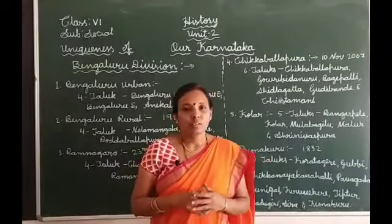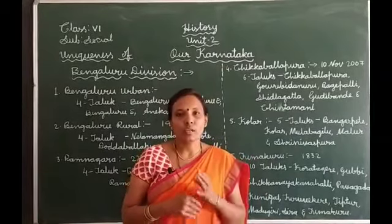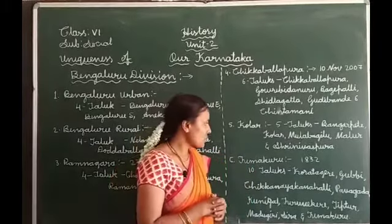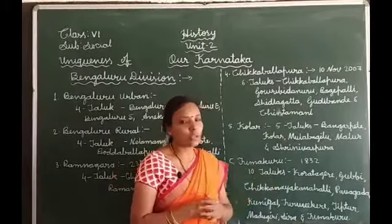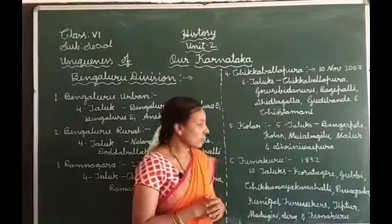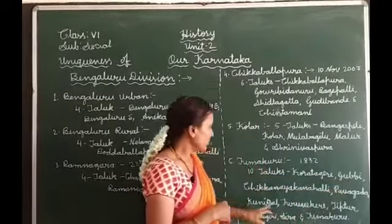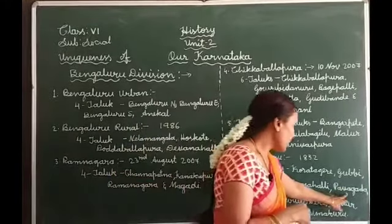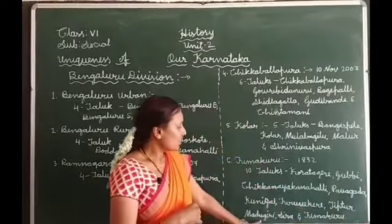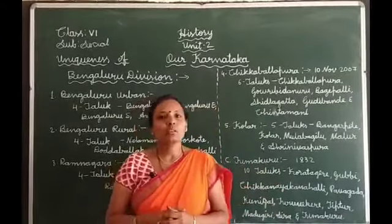The next district is Tumkuru, well known for coconut. It is one of the largest districts in our state, with 10 taluks. This district came into existence in the year 1832. The taluks are Koratagere, Gubbi, Chikkanayakanhalli, Pavagada, Kunigal, Turuvekere, Tiptur, Madhugiri, Sira, and Tumkuru.